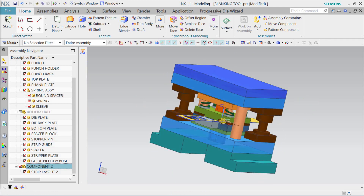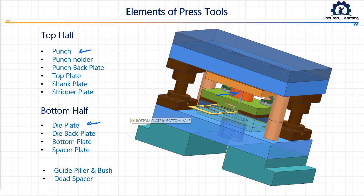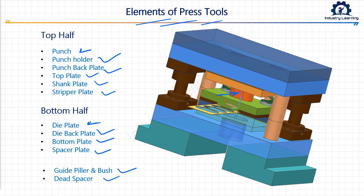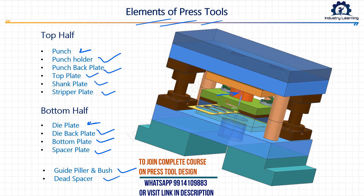So these are the elements of the press tool we have discussed: punch, die plate, punch holder, punch back, top plate, shank, stripper plate, die base, die back plate, bottom plate, spacer plate, guide pillar and bush, sand plate, and spacers. We will discuss what each of these is and why we use them in coming sessions in detail. Right now this was just an overview so that during calculations you have an idea about what plates we are talking about. Eventually you will understand not only the design but the complete concept, so that during tryouts if you face any issues you can solve them without confusion.